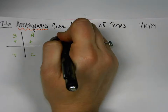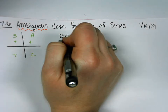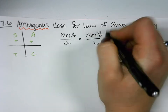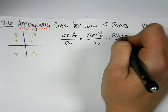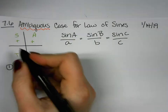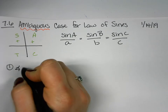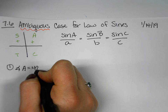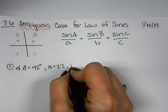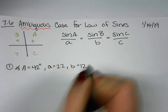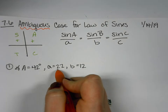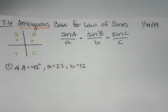As a reminder, our law of sines states that sine of an angle over the side opposite it equals sine of a different angle over its opposite side, and sine of the third angle over its opposite side. In the first example, we're going to solve the triangle just like we've done before. We have angle A = 42 degrees, side a = 22, and side b = 12. Since we have an angle and its opposite side plus another side, we can start by finding angle B.